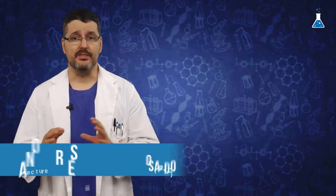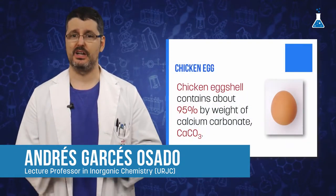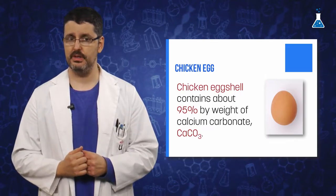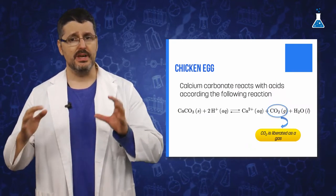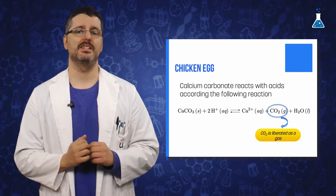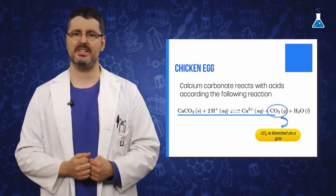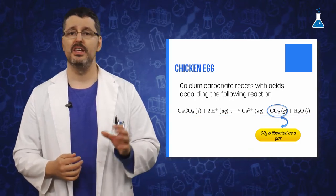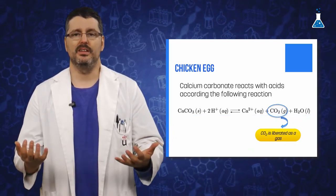Chicken eggshell contains about 95% by weight of calcium carbonate, a basic compound. This basic compound will react with acid according to the following equilibrium reaction. As we observe in the equation, carbon dioxide is obtained which is liberated as a gas.